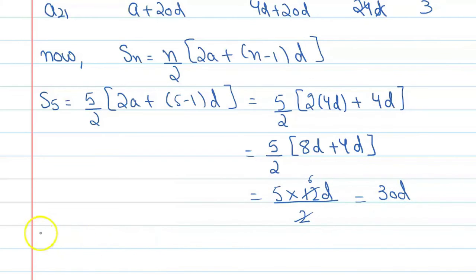Similarly, now we will find the value of s21. So s21 is equal to how much? You can say 21 upon 2, 2a plus 21 minus 1 into d. Now this will become 21 upon 2, and it is 2a means 4d. Put this value. 21 minus 1 that is 20d.